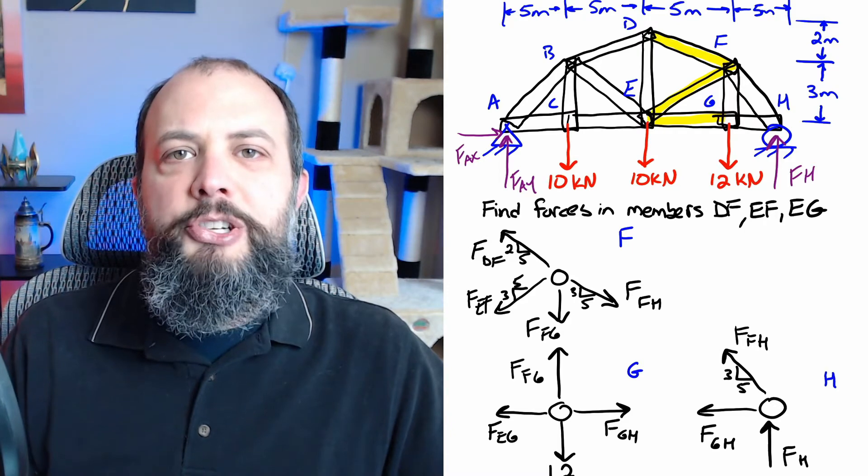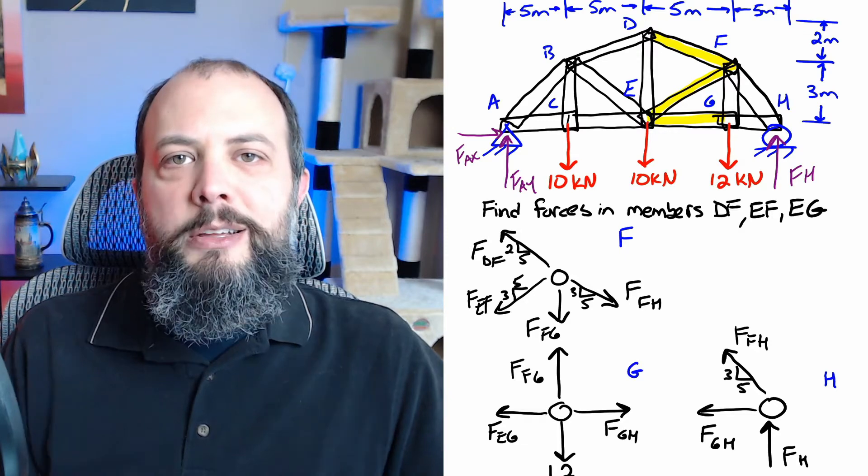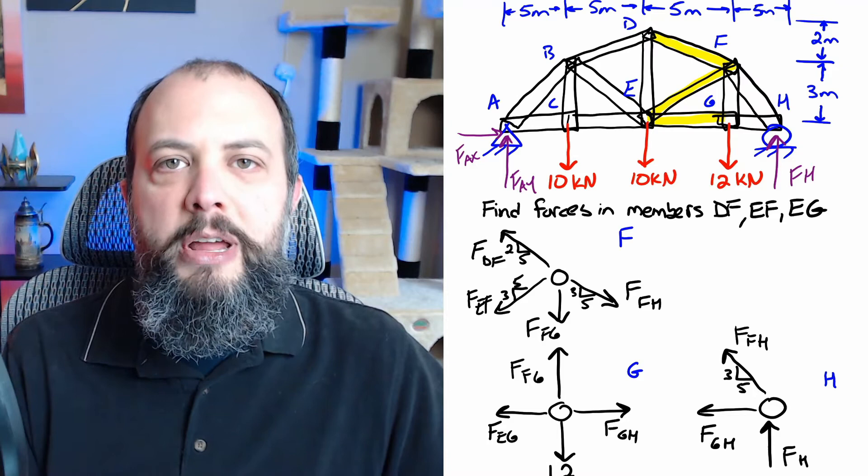So looking at our initial picture it would have been great to start at point F since two of our forces are at point F but unfortunately there's four unknowns at that location so we have to start somewhere else and work our way there.